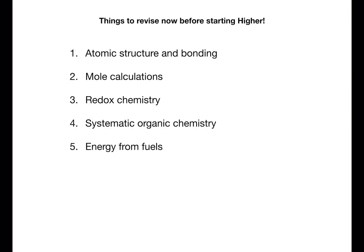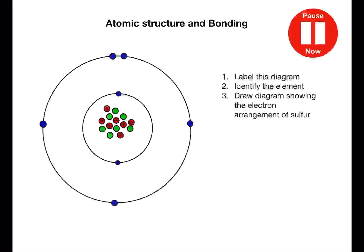Don't worry if you can't answer any areas — I will go over the answers to the questions. Make sure you write down a note of which areas you're struggling with so you can revise those before you start your Higher course. Let's start with atomic structure and bonding. Pause the video now and label this diagram. Identify the element and then draw a diagram showing the electron arrangement for sulfur.